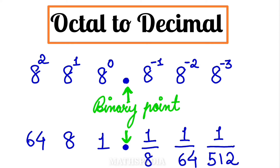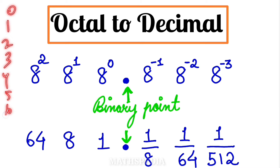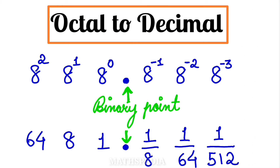In this video we are going to convert octal to decimal. Octal base is 8 and decimal base is 10. Octal means we have the numbers 0, 1, 2, 3, 4, 5, 6, 7 — so 8 numbers total. For decimal we have 10 different symbols: 0 through 9, so 10 numbers total.